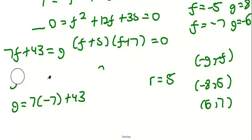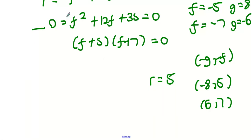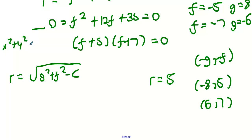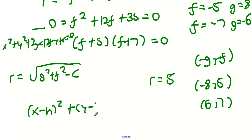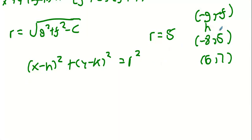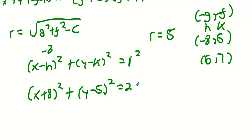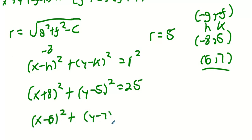I'll convert to the form (x minus h) squared plus (y minus k) squared equals r squared as it's quicker than working out the c values. For the first circle with center (minus 8, 5): (x plus 8) squared plus (y minus 5) squared equals 25. For the second circle with center (6, 7): (x minus 6) squared plus (y minus 7) squared equals 25. Those are the two answers to this question.